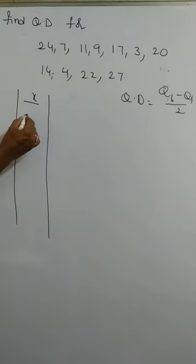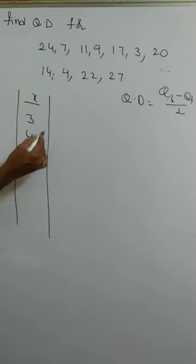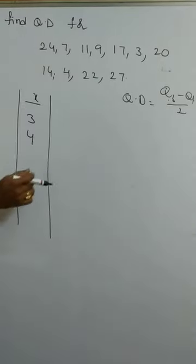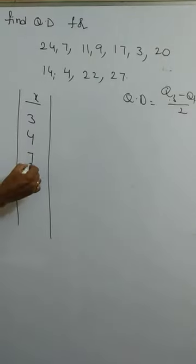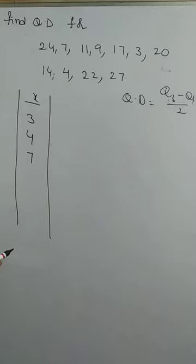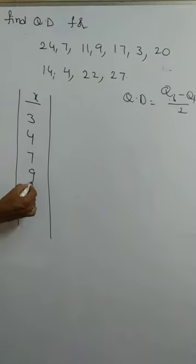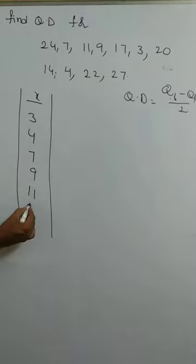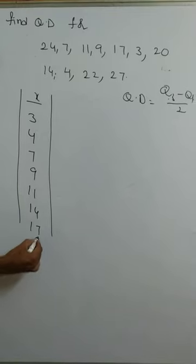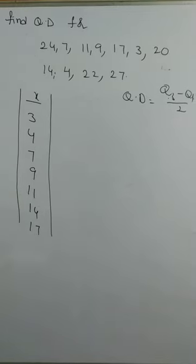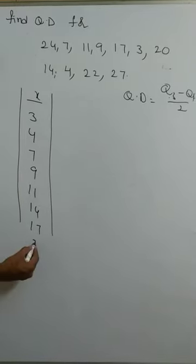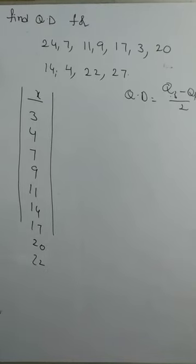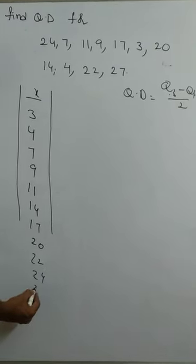The data arranged in ascending order is: 3, 4, 4, 7, 9, 11, 14, 17, 20, 22, 24, 27.